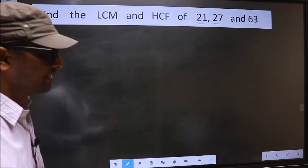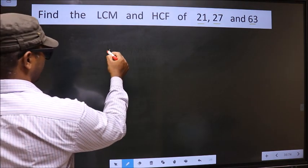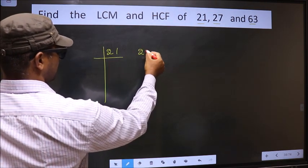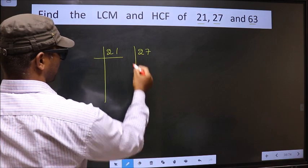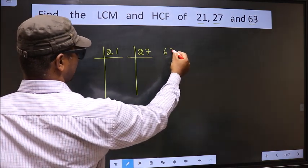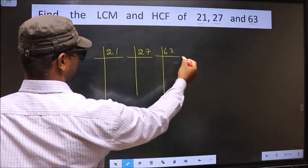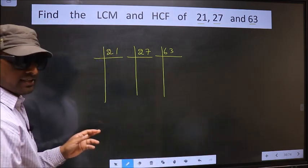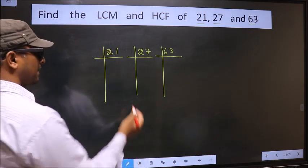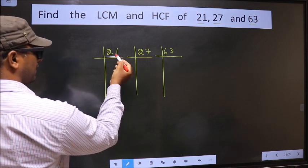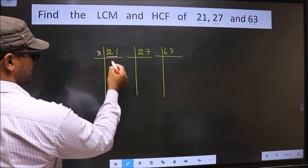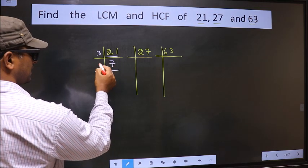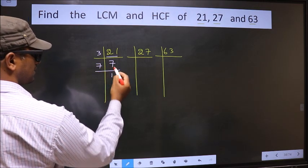That is, see 21, 27 and 63. Okay, next. Here we have 21. 21 is 3 times 7 equals 21. Now we have 7. 7 is a prime number, so 7 times 1 equals 7.